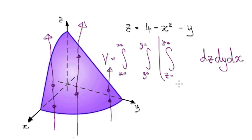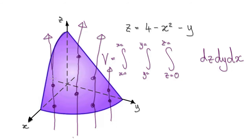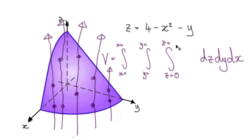Looking at the inner integral, we're moving along the z direction. You enter z equals 0, and then you leave the surface. What is this surface? The surface is given by this equation, which means z goes from 0 to 4 minus x squared minus y.